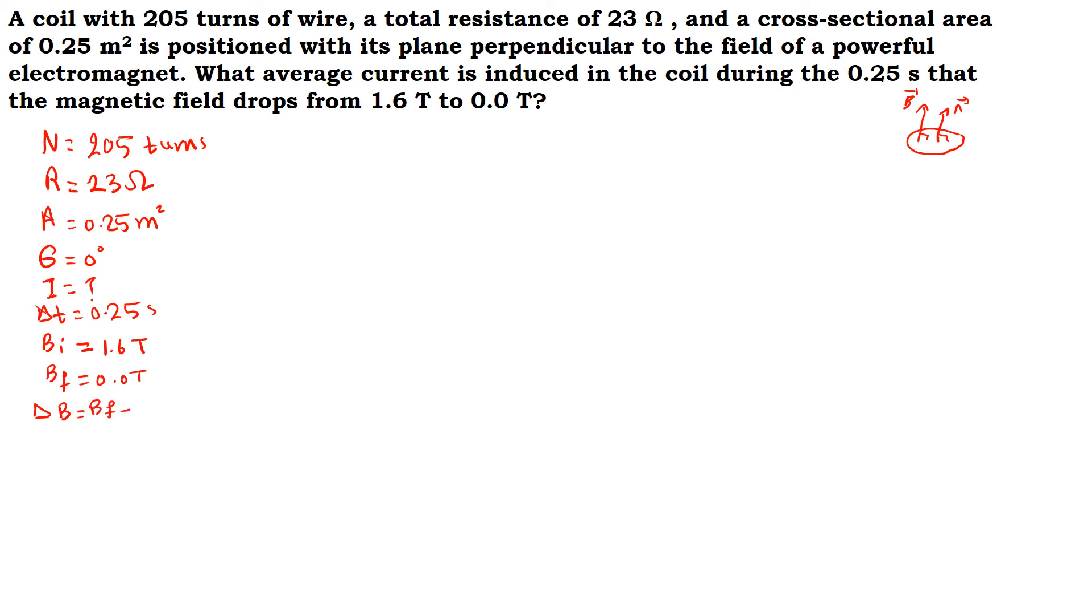If we wanted to find the change in the magnetic field, ΔB equals B final minus B initial, then ΔB is equal to 0 minus 1.6. ΔB is equal to negative 1.6 tesla.